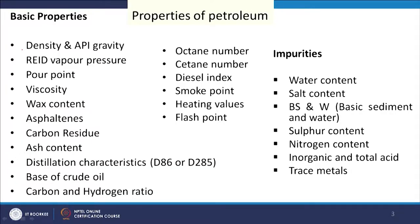Petroleum has some properties which are interesting for us as we are dealing with its utilization as energy feedstock. Like coal, it also has some properties. But unlike coal, petroleum is mostly used to produce transportation fuel. The properties which are most important are density and API gravity, Reid vapor pressure, pour point, viscosity, flash point, cloud point, wax content, asphaltene contents, carbon residue, ash content, and distillation characteristics.